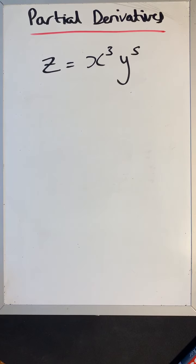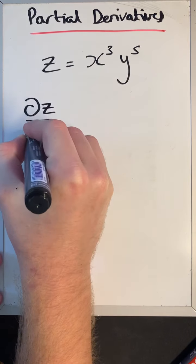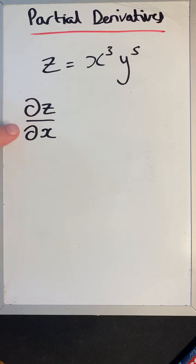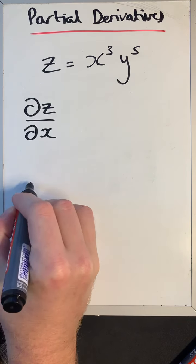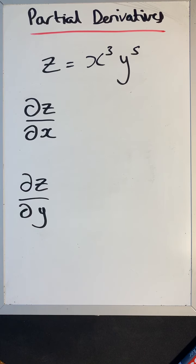The rate of change of z is dependent upon the changes of x and the changes of y. We can differentiate z with respect to x, written as ∂z/∂x, using curly d's — this is what we call a partial derivative. We can also differentiate with respect to y, written as ∂z/∂y. These are our first-order partial derivatives.